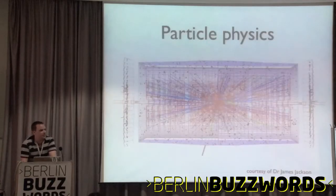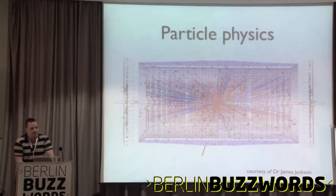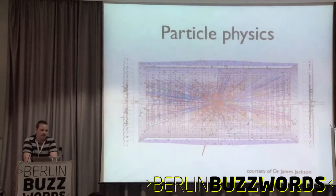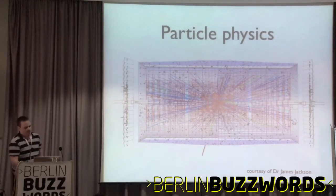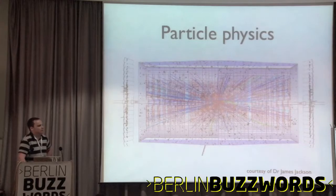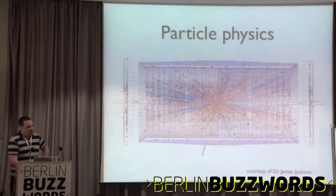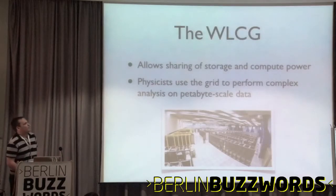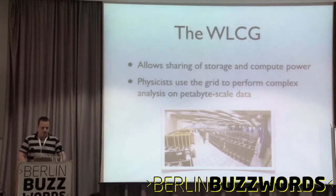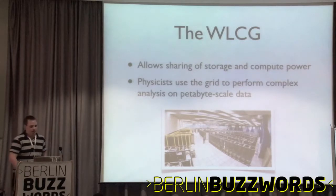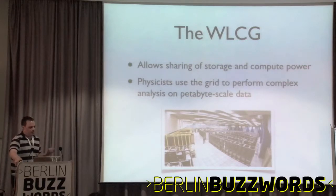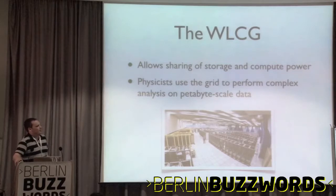Particle physics comes into this because they've been dealing with scalability for years. With a particle collider like the LHC, they generate about 15 petabytes a year, and they've spent the best part of 15 to 20 years working out how best to store and analyse all this data. The approach in big data academia is grid computing. The particle physicists have the worldwide LHC computing grid, which lets the various organisations share their compute resources — both storage and compute power — so all the physicists in the collaboration can perform analysis on petabytes of data.